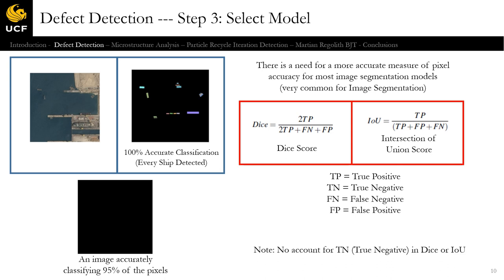Now we need to select a model. For accuracy quantification, a one-to-one ratio of correctly classified pixels is not sufficient — the dice score and IOU score put more weight on the true positives and less on the true negatives. This is currently one of the better methods for image segmentation accuracy quantification, state-of-the-art in those areas. We're going to use a convolutional neural network, more specifically the ResNet, which is a more advanced type of CNN.